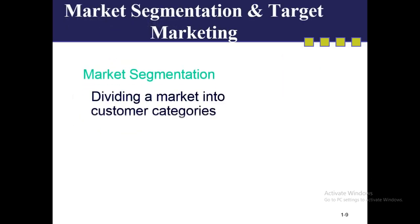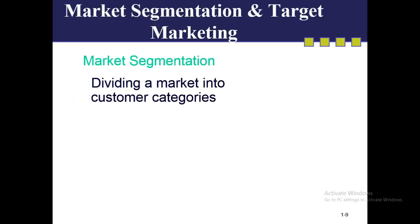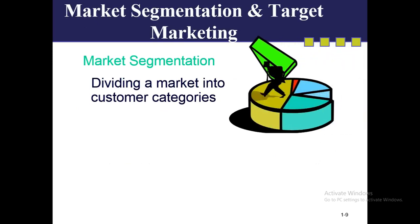Next concept: market segmentation and target market. When we divide the entire market into various categories — those people who have similar kinds of wants — we get market segments. There are many products available, and different people use different types of products.